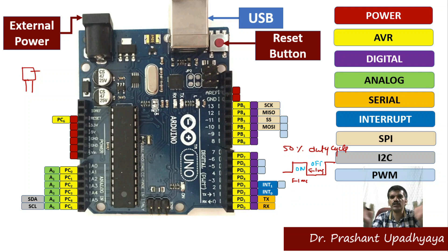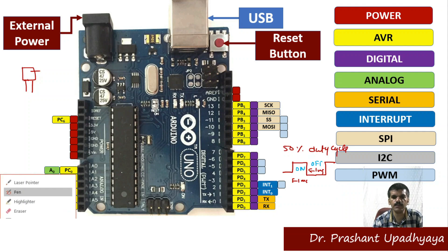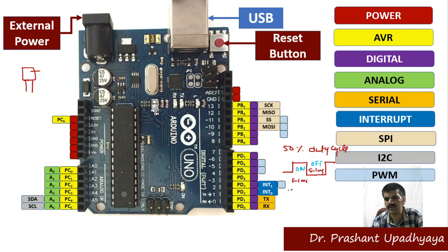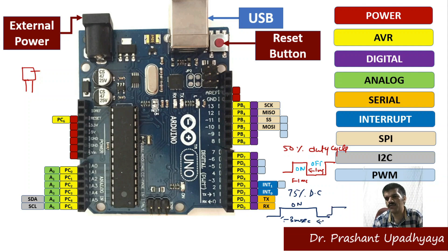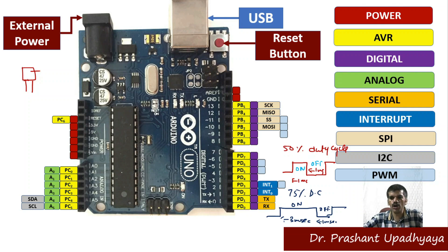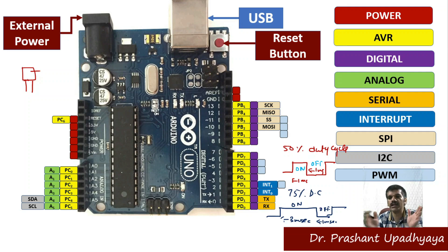If I want a 75% duty cycle, I increase the on-time width. For example, the LED is on for 3 milliseconds and off for 1 millisecond. The on-time period has been increased — that is, we have modulated the width of the pulse — which is why it's called Pulse Width Modulation. I hope the Arduino UNO board pins are now clear to you.